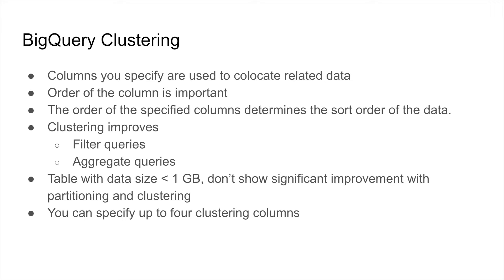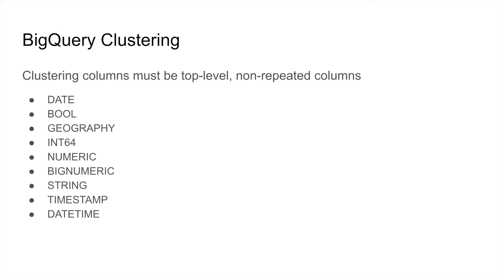In a clustering table, you can specify up to four clustering columns. The clustering columns must be top-level and non-repeated columns. You can choose between the following types for your clustering columns: date, boolean, geography, int, numeric, string, and datetime.